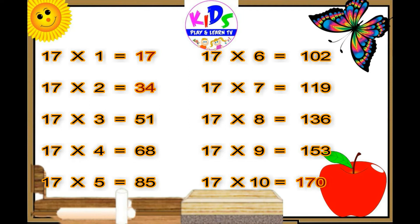17 fives are eighty-five. 17 sixes are hundred-and-two, 17 sixes are hundred-and-two. 17 sevens are hundred-and-nineteen, 17 sevens are hundred-and-nineteen. 17 eights are 136, 17 eights are 136. 17 nines are 153, 17 nines are 153. 17 tens are 170, 17 tens are 170.